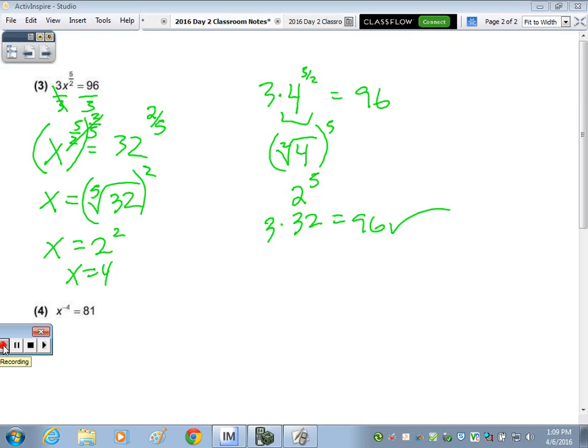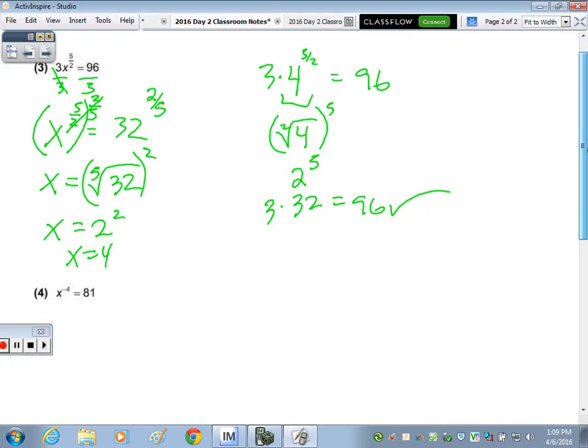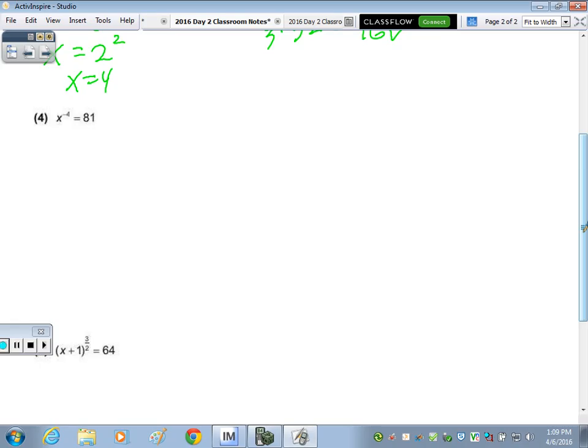And number four, the exponent's not a fraction. But you can make it a fraction by putting what underneath? One. So therefore, it is isolated. I would raise it to the negative what power? Reciprocal of four over one is one-fourth. And I want to raise it to a negative so that negative times negative becomes a positive one. So negative one-fourth. So do I take the first root of 81 or the fourth root? Fourth. Fourth. And I suggested you always put the negative with the numerator, and that's outside. Fourth root of 81? Three. Three. And then three to the negative one.